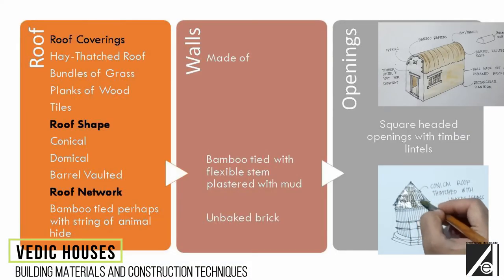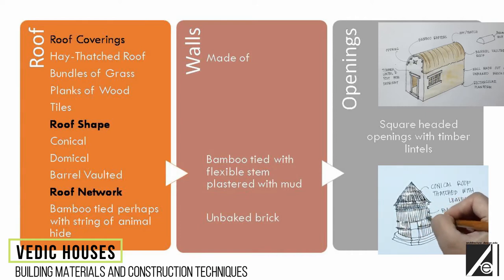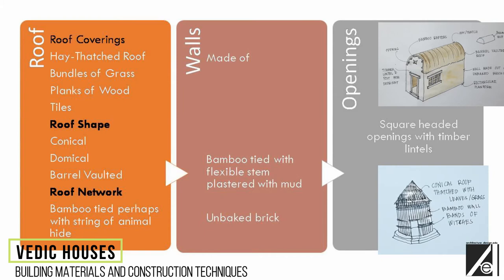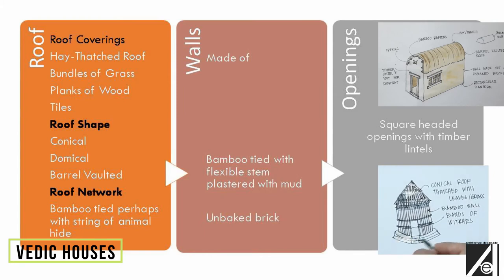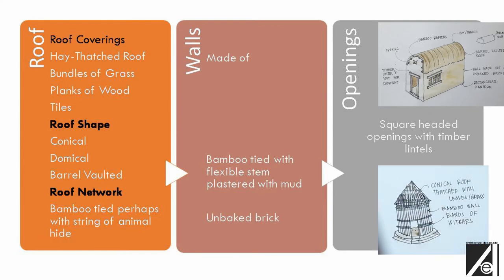The walls were mostly of unbaked bricks, and timber lintels and posts were used for the doorways and windows. Here I have compiled the building materials and construction techniques used for the roof, the walls, and for spanning the openings.